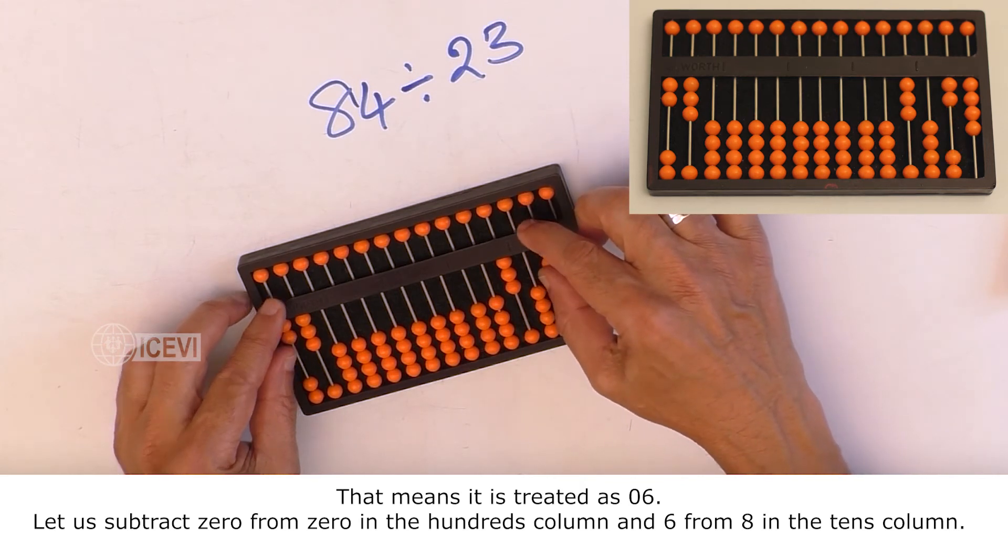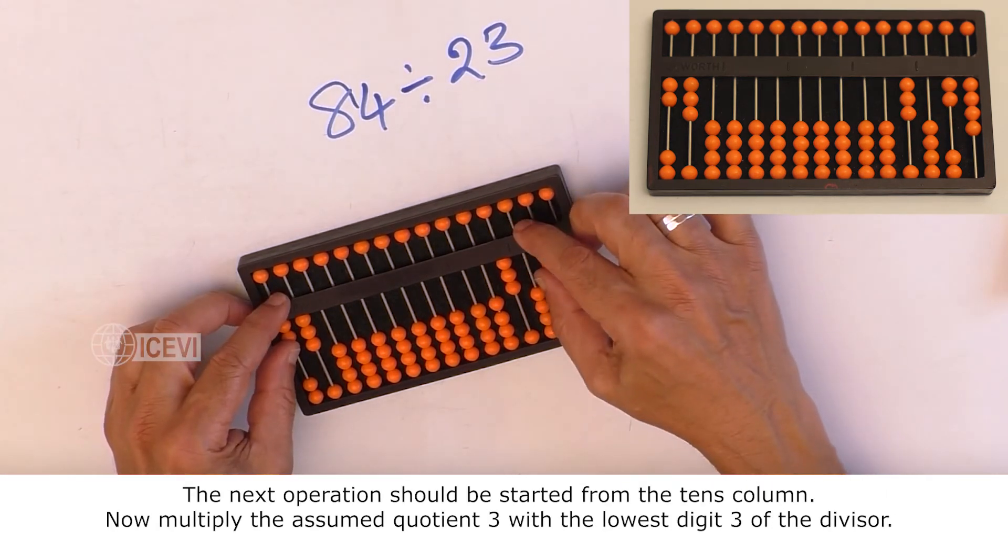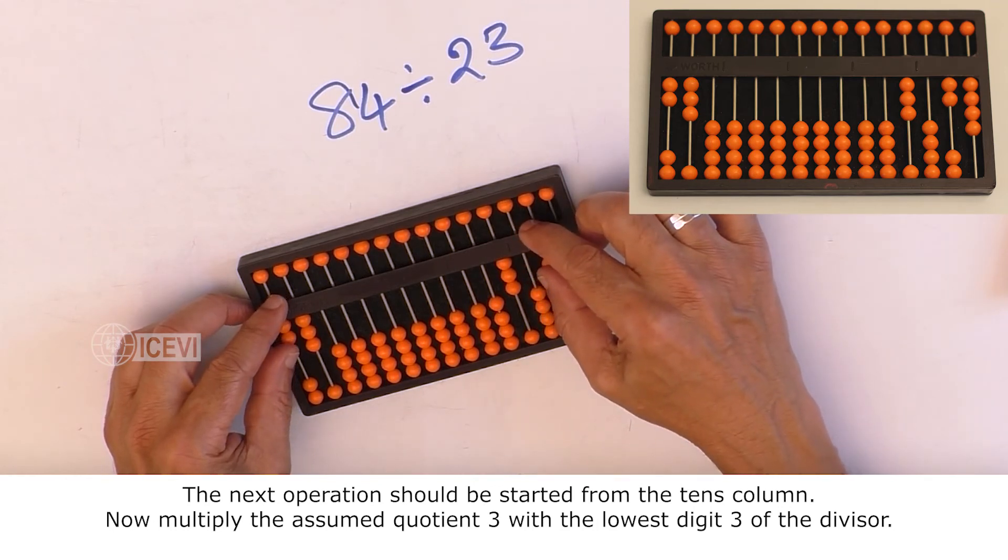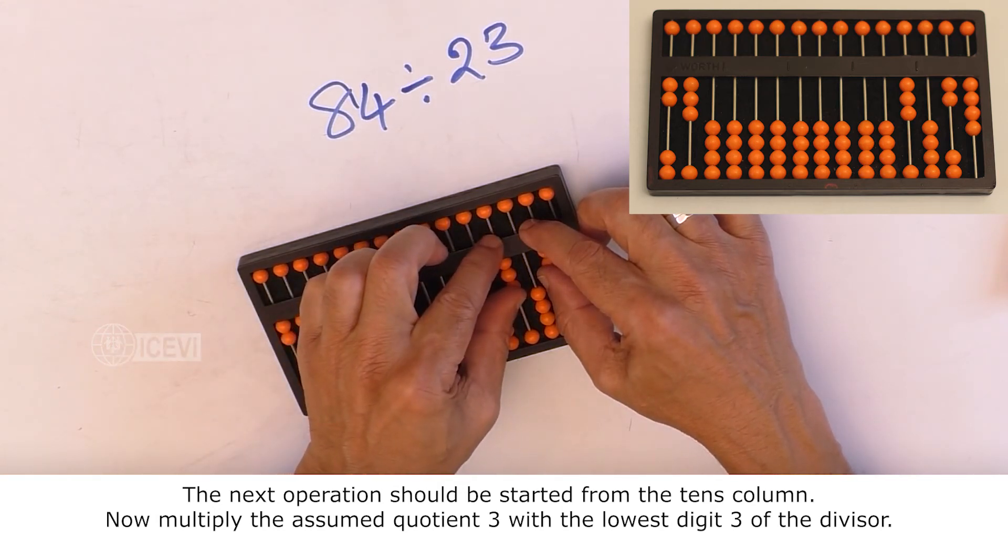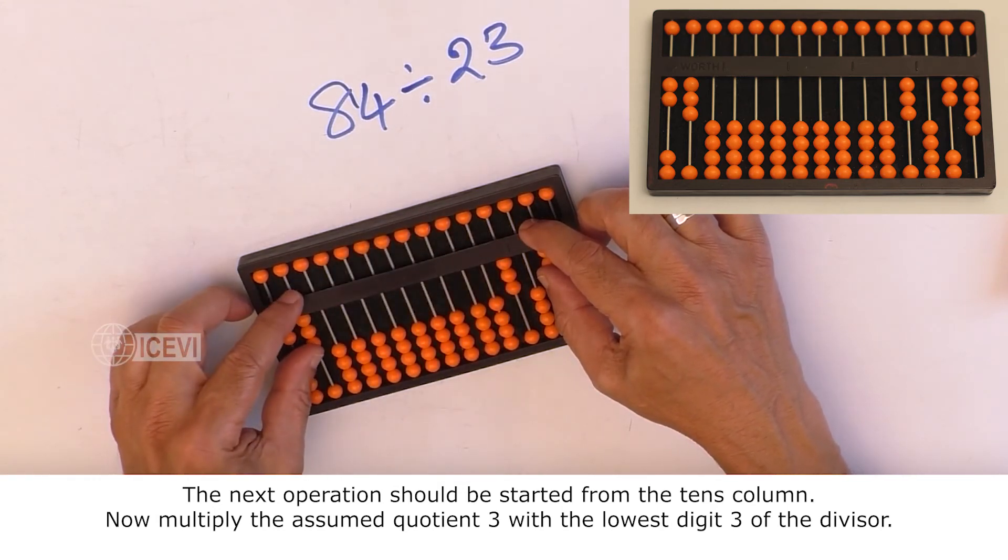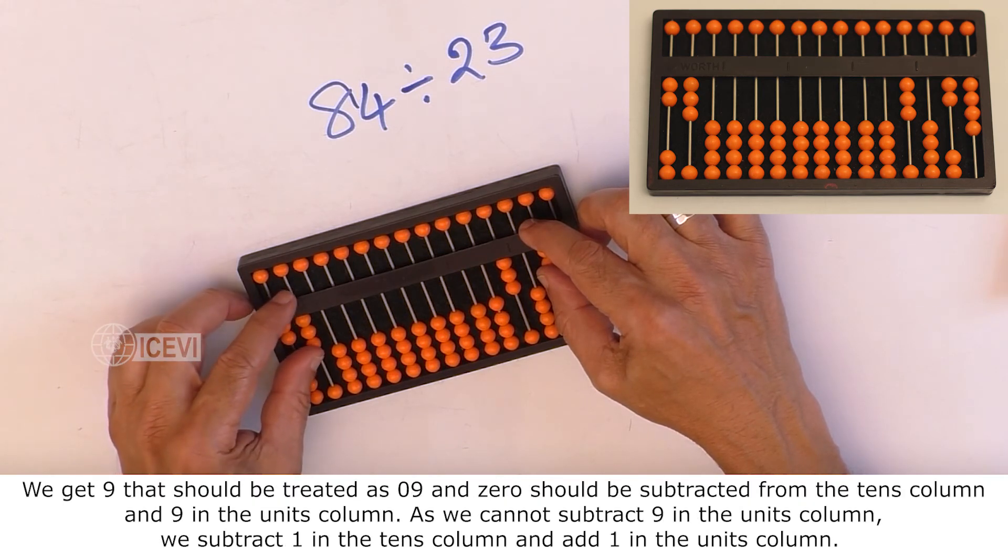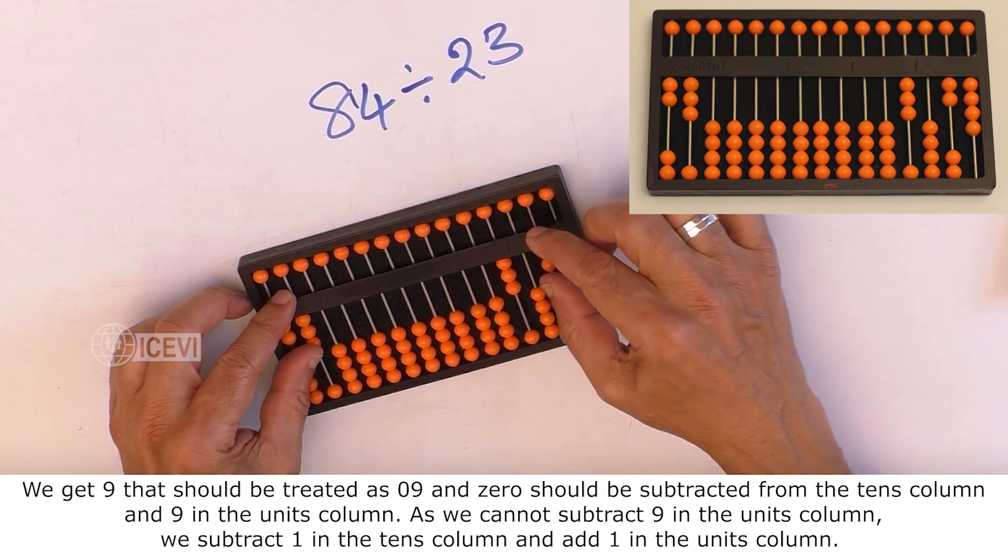Now multiply the assumed quotient 3 with the lowest digit 3 of the divisor. We get 9 that should be treated as 09. And 0 should be subtracted from the tens column and 9 in the units column.